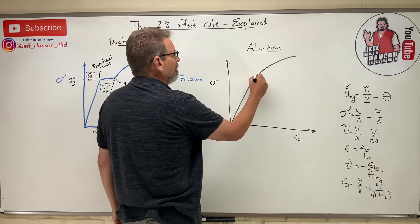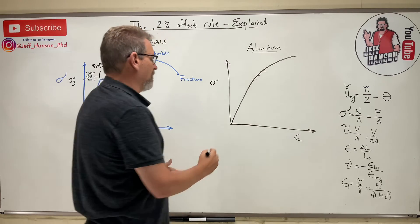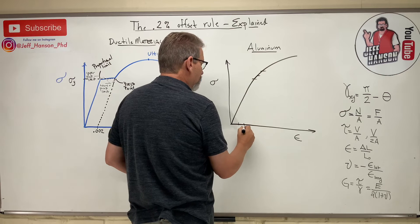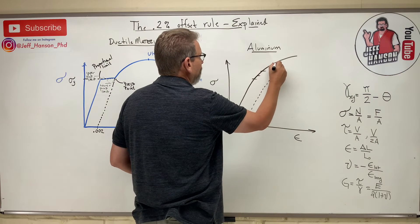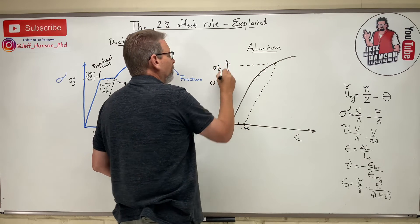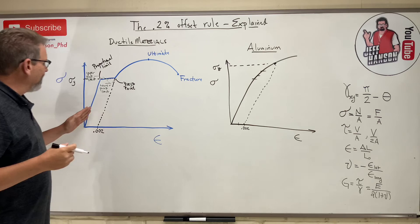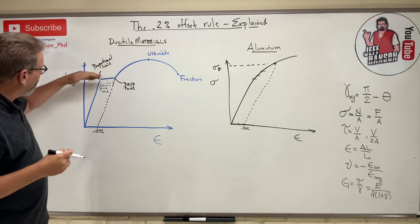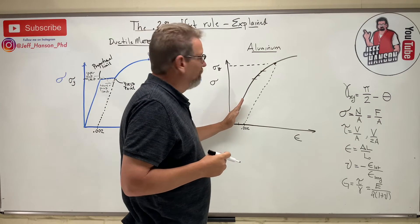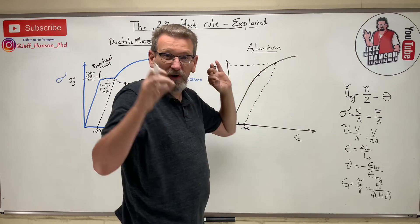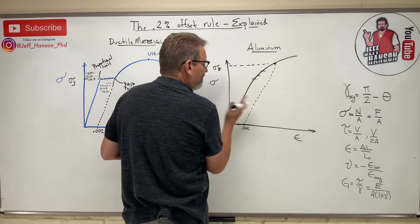How do I find where that curve happens — do I put the yield stress here, or there, or where? Again, we come over to 0.002, draw a parallel line, and that gives us sigma yield for aluminum. For materials where the yield point isn't obvious — where you don't get that flat plateau — you offset that line 0.002, draw a parallel line, and that tells you exactly where the yield point is.